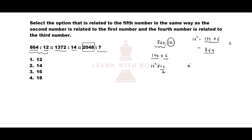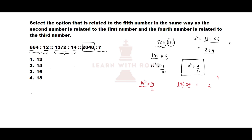So the pattern is: n squared into n by 2. Now let us verify the second set: 1372 and 14. We do 14 square into 14 by 2. 14 square is 196 and 14 by 2 is 7. 196 times 7 gives 1372, which verifies the number related to 14.